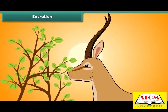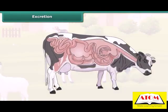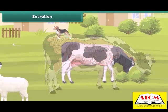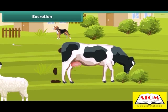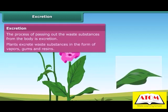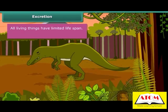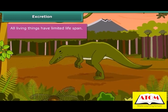Animals require food for growth and development; however, during the process of digestion, many waste materials are produced in the body which do not provide any nourishment. Therefore, they are excreted out from the body. The process of passing out waste substances from the body is called excretion. Plants excrete waste substances in the form of vapors, gums, and resins.